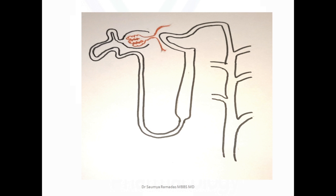This is a schematic representation of the renal nephron. You can see that a part of the nephron comes in close contact with the afferent and efferent arteriole. This forms the juxtaglomerular apparatus, which plays a key role in the tubuloglomerular feedback mechanism.